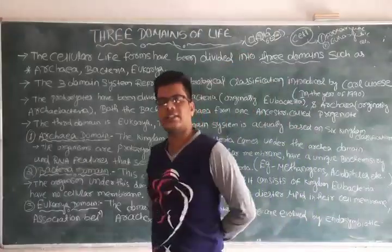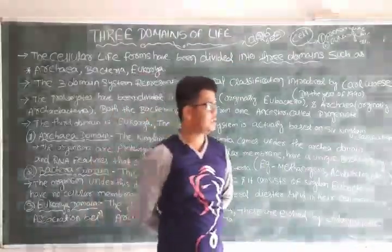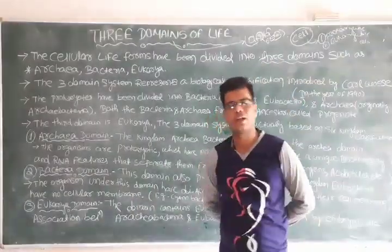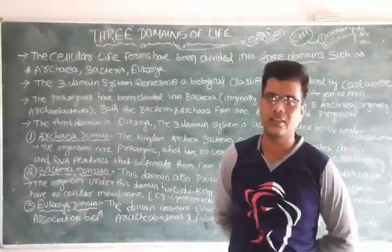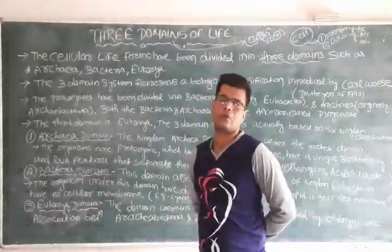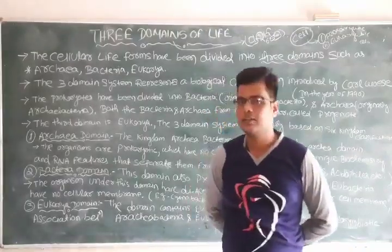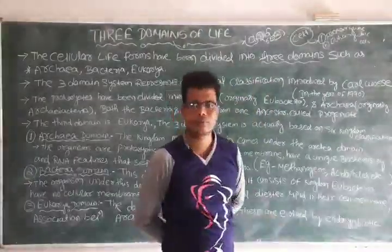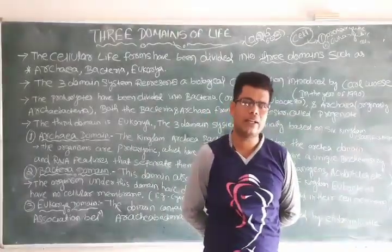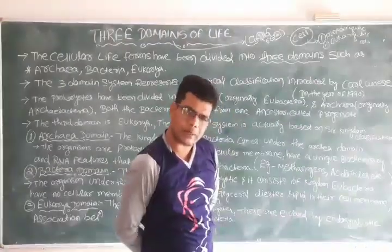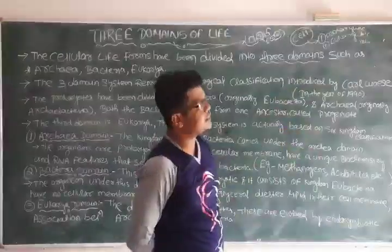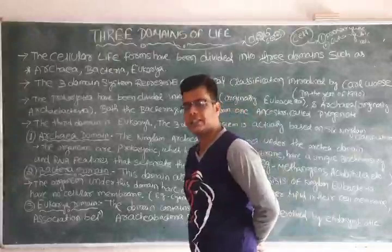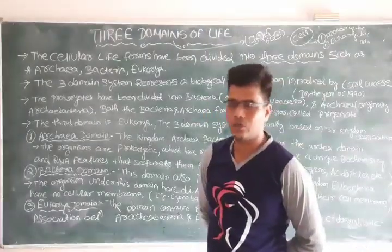What is the difference between the prokaryotic cell and the eukaryotic cell? I will give a short explanation here, and we will discuss it in detail later when we study the cell chapter. The main difference is the nucleus. In a prokaryotic cell, the nucleus is absent, whereas in a eukaryotic cell, the nucleus is present.